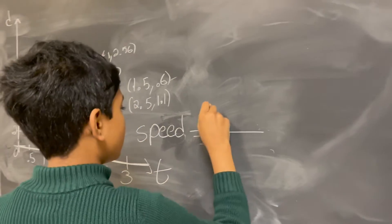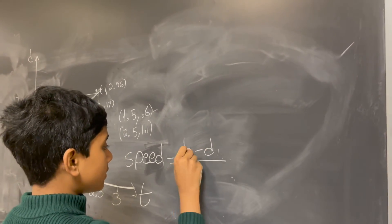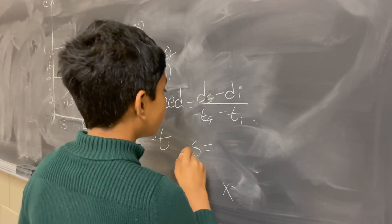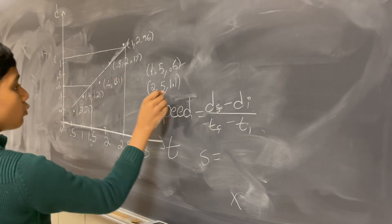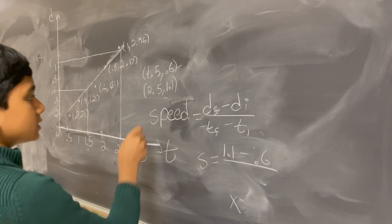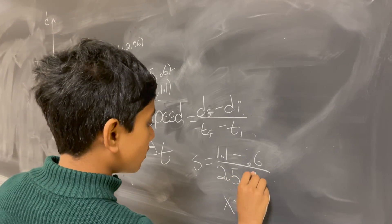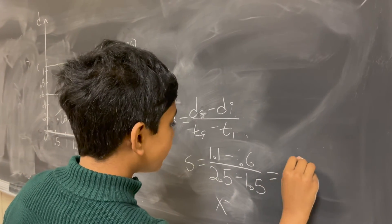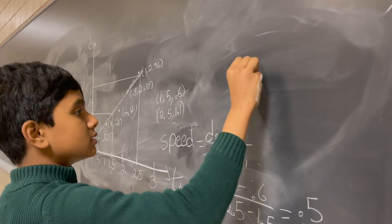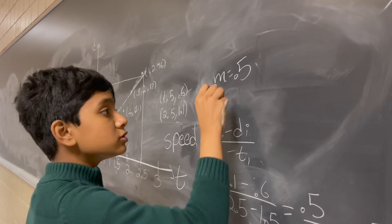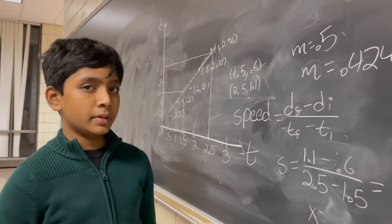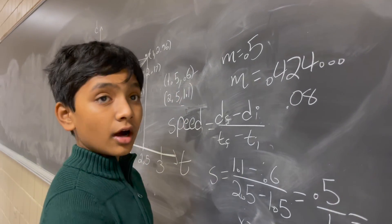Speed equals the final distance minus the initial distance over the final time minus the initial time. D final is 1.1, D initial is 0.6, T final is 2.5, T initial is 1.5. That gives us 0.5 over 1, which is just 0.5. So my approximation of the slope is 0.5, even though the real slope is 0.424. I was only off by about 0.08, which is not a lot.